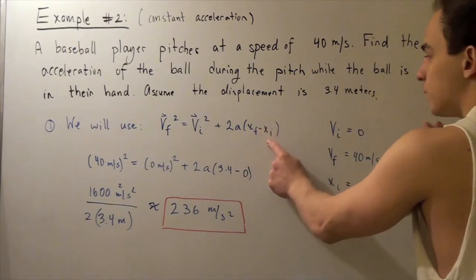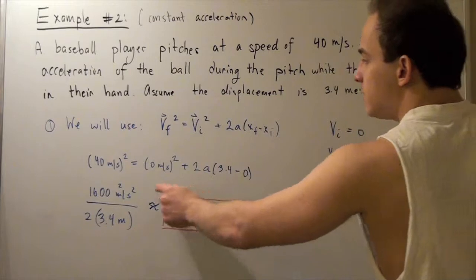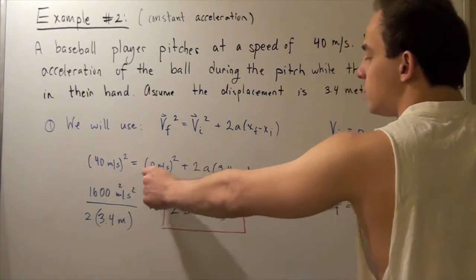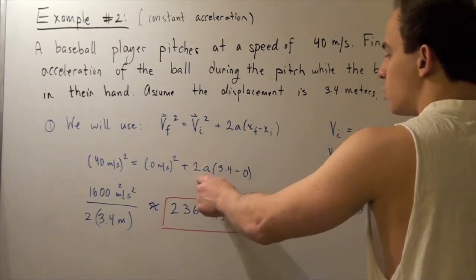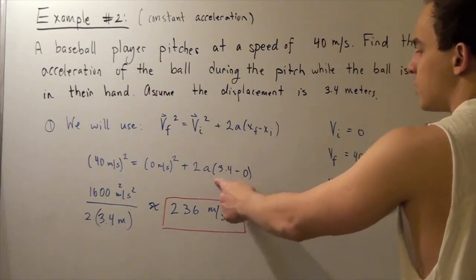We plug in 0 for Xi and 3.4 for Xf. So we get 40 squared, which gives us 1,600, equals 0 squared, which gives us 0, plus 2A, the unknown, multiplied by 3.4 minus 0, which is simply 3.4.